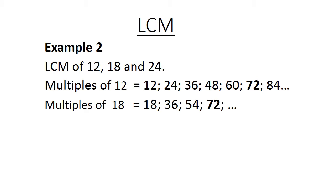Multiples of 18 are 18, 36, 54, 72 and it can still go on. Multiples of 24, 24, 48, 72. The lowest common multiple is 72.